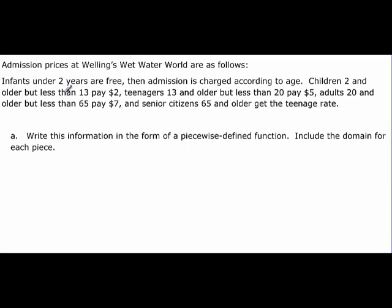All right. Let's try this one. Admission prices at Welling's Wet Water World are as follows. Infants under two years are free. Then admission is charged according to age. So let's see. It asks us to write the piecewise function. So let's just write that as we go. So this is admission, so we'll call it A(t), t being age. And we have infants would be zero to two years, be free.